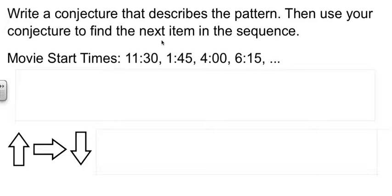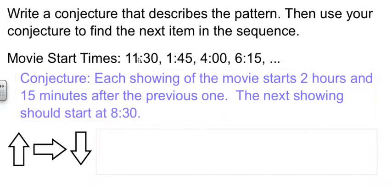Well, if we look at our times closely, we notice that they're 2 hours and 15 minutes apart. So then our conjecture would be each showing of the movie starts 2 hours and 15 minutes after the previous one. That's our conjecture. That's what we've observed from the pattern, is that it's been 2 hours and 15 minutes each time, so we expect that pattern to continue.